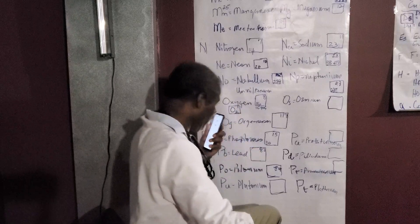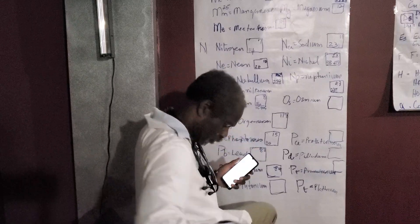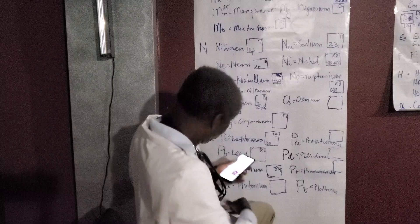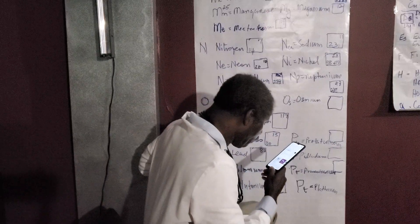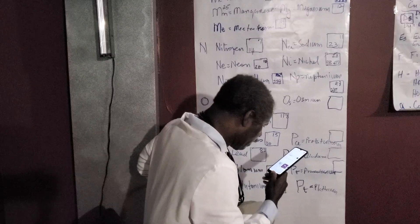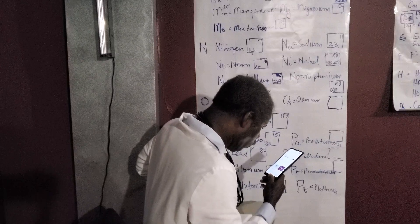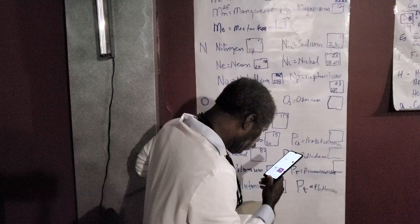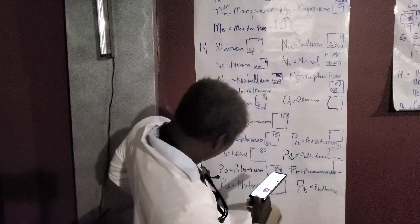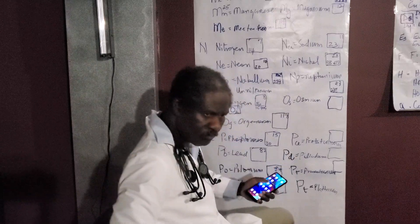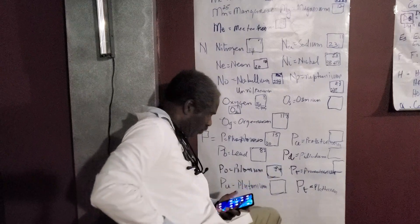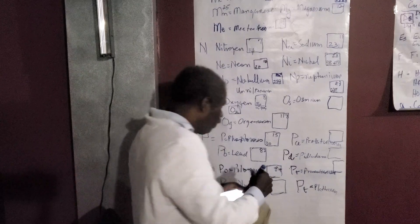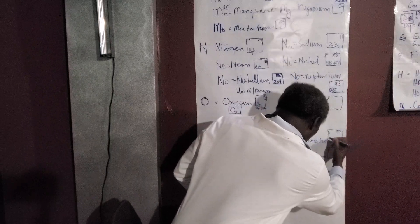The element symbol PA is protactinium, with atomic number 91 and atomic weight 232.